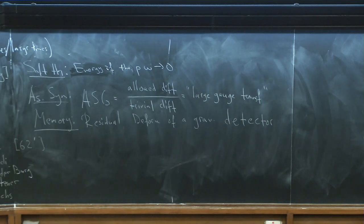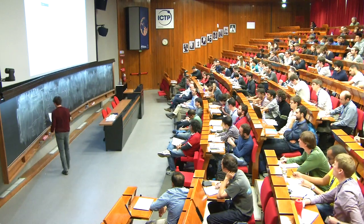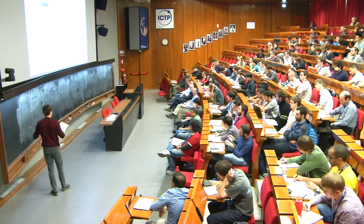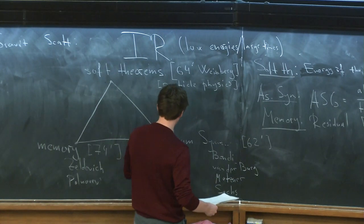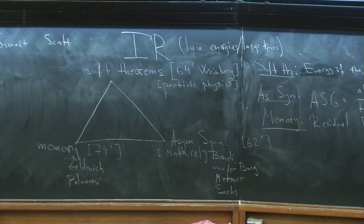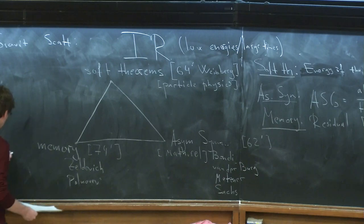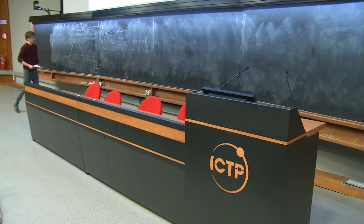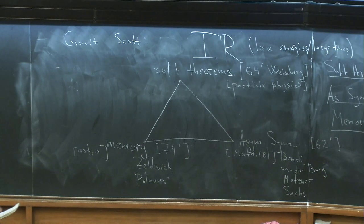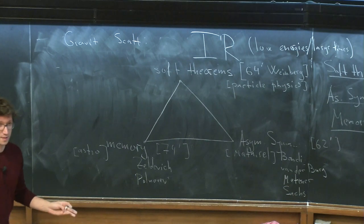These three subjects — soft theorems, asymptotic symmetries, and memory effects — were very old and were developing separately. Soft theorems were mostly known to particle physicists. Asymptotic symmetries were studied by people doing mathematical relativity. Memory effects were known to people doing astronomy, astrophysics, and gravitational wave research. Until very recently, these very old subjects — which are 50 years old — were developing separately. The recent development was the realization that they are actually all the same thing in disguise.